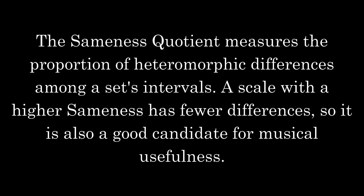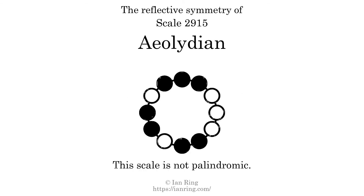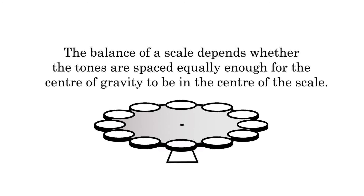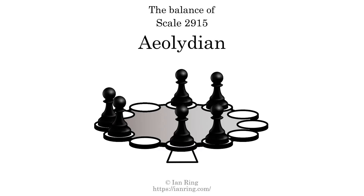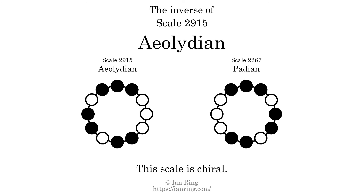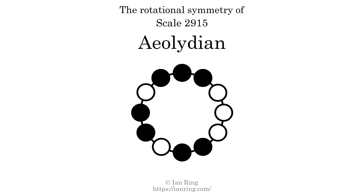The sameness quotient measures the proportion of heteromorphic differences among a set's intervals. A scale with a higher sameness has fewer differences, so it is also a good candidate for musical usefulness. The sameness quotient is 0.286. This scale has no reflective symmetry. This scale has a different pattern of intervals ascending and descending, so it is not palindromic. This scale has no ridge tones. This scale is not balanced. The inverse of this scale is a mirror image — it is what you get when the sequence of intervals is reversed. The inverse of this scale is scale 2267, also known as Padeon. This scale is chiral; it cannot transform into its inverse by rotational transformation. This scale has no rotational symmetry.